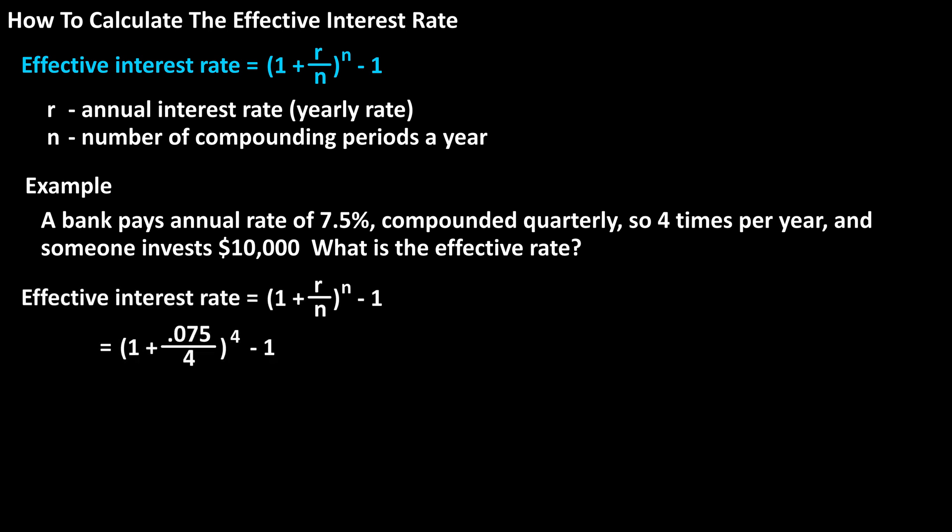Using our formula, we have effective rate equals 1 plus 0.075, the decimal value of 7.5%, divided by 4, raised to the 4, minus 1.